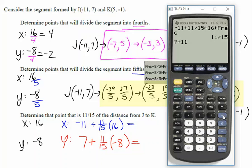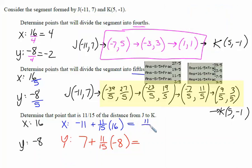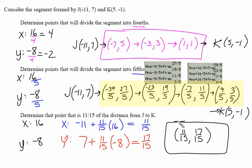And then the y will be 7 plus 11 fifteenths times negative 8. Math, convert to fraction. So our answer would be 11 fifteenths for the x, and 17 fifteenths for the y. The final answer to that question would be 11 fifteenths comma 17 fifteenths. That would be the point that is 11 fifteenths of the way from J to K.